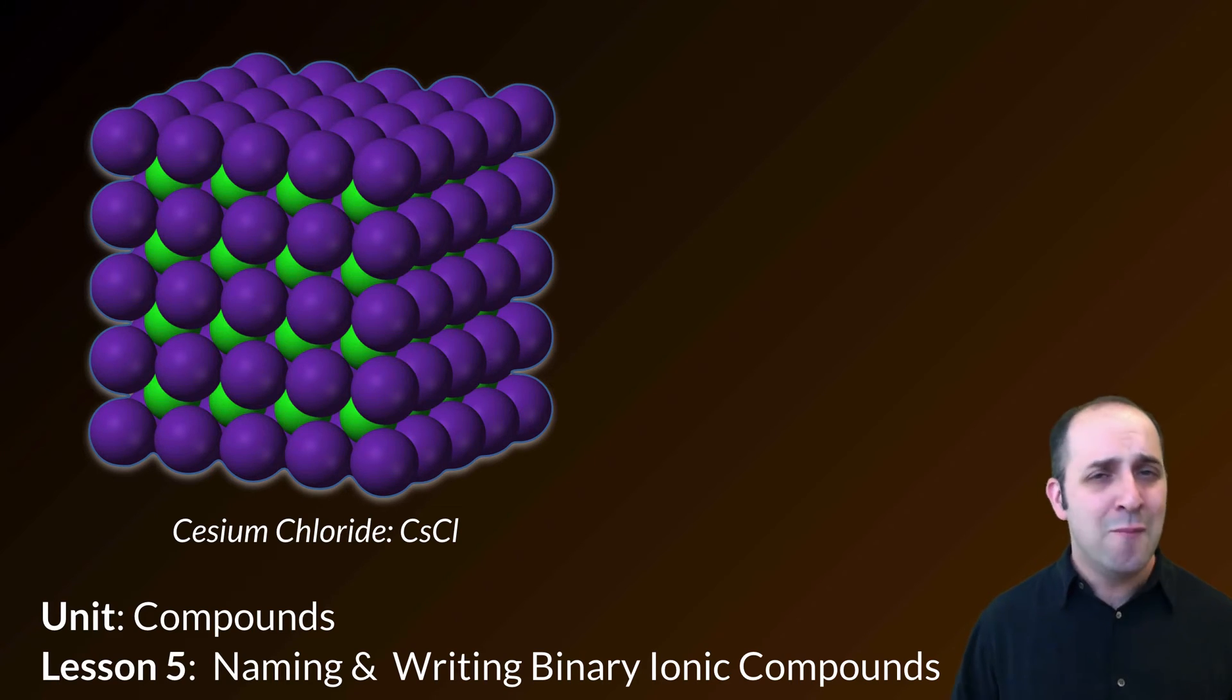This is pretty classic chemistry, but it's also a little dry. The trick here is to practice. The more you practice with this, the better you'll be, and we want to get to a point where this is just second nature. Our first lesson here, Lesson 5, is going to deal with naming and writing binary ionic compounds.